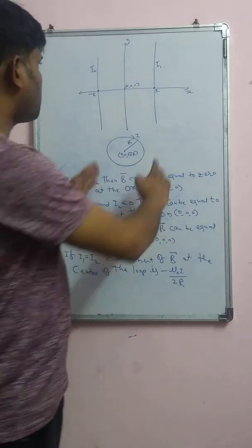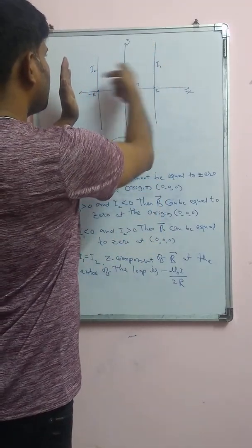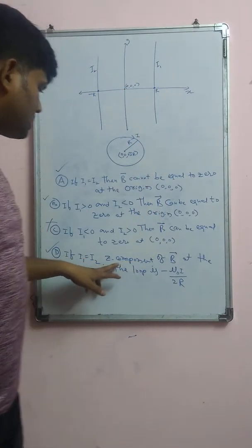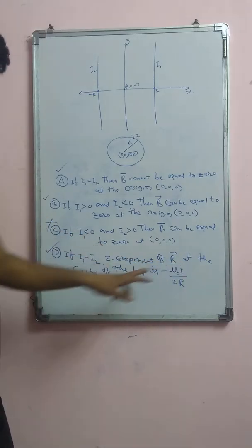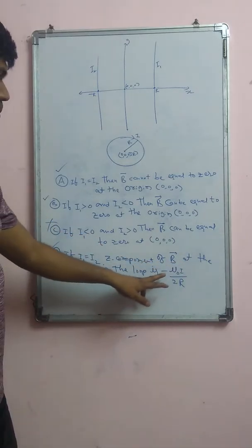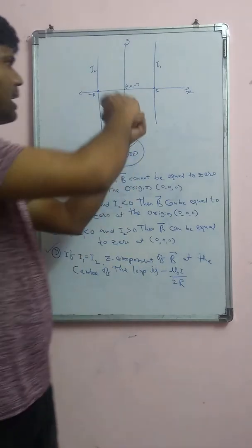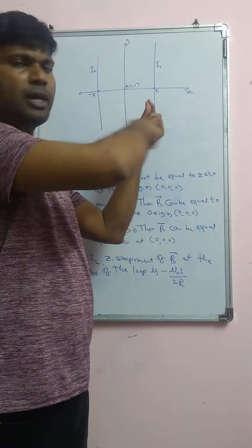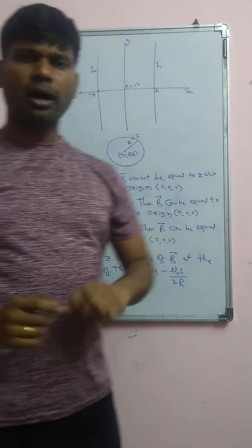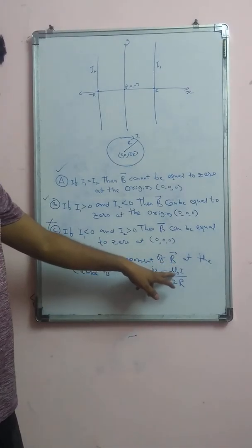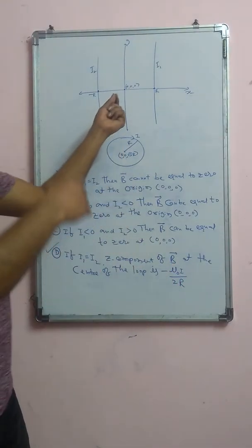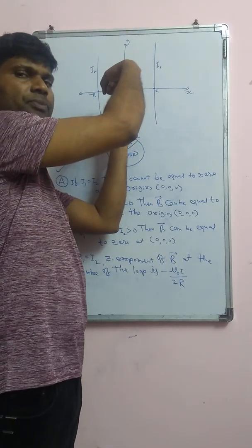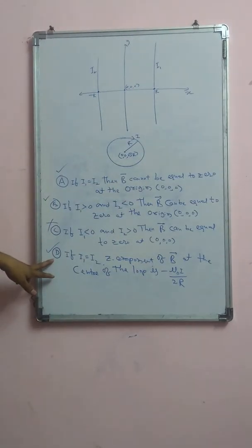Option D: if i1 equals i2 (same direction), the contributions from the two wires cancel each other. The z-component of B at the center of the loop is minus μ₀i / 2r — it is negative because it is along the negative z direction. So Option D is also correct. Therefore, the correct answers are A, B, and D.